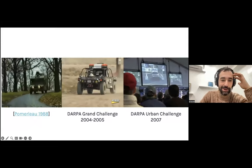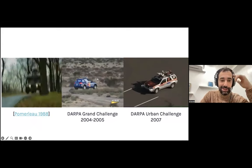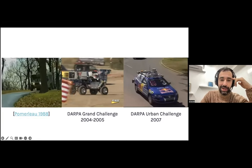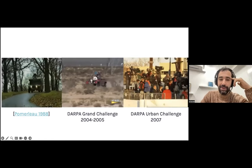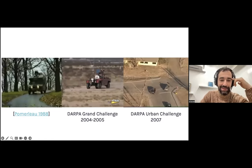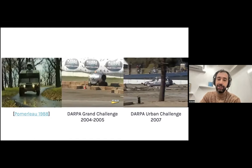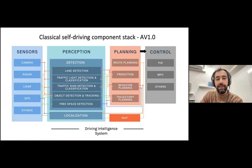Self-driving is at this point already quite an established field. It started in 1988 — that was the first car, and you should check it out to see how cool it was. It was just driving using one line effectively from the camera. Then we had several DARPA challenges that gave rise to the whole self-driving industry, and from that time the self-driving stack was mainly built based on a scheme with several components.